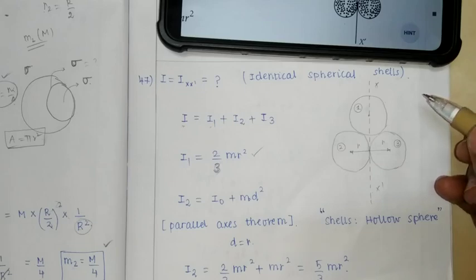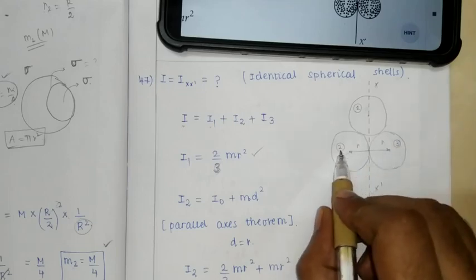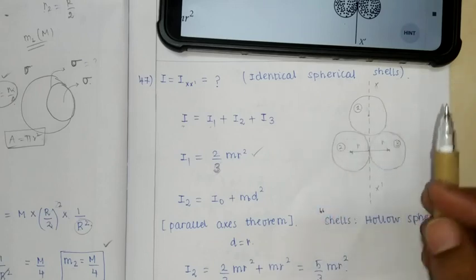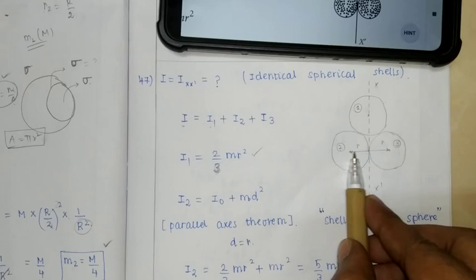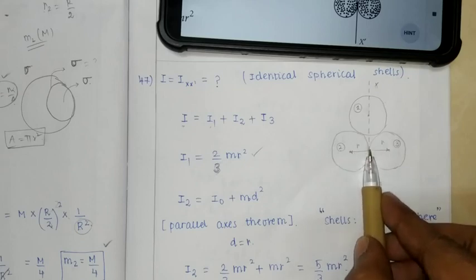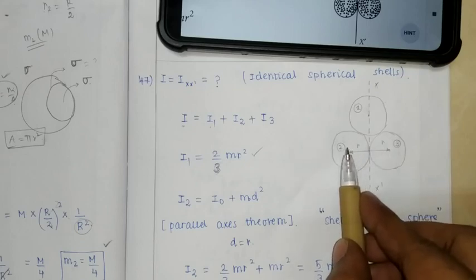I2: To find the second spherical shell - the xx' axis does not pass through the center of mass. It's parallel at some distance, so we use the parallel axis theorem.